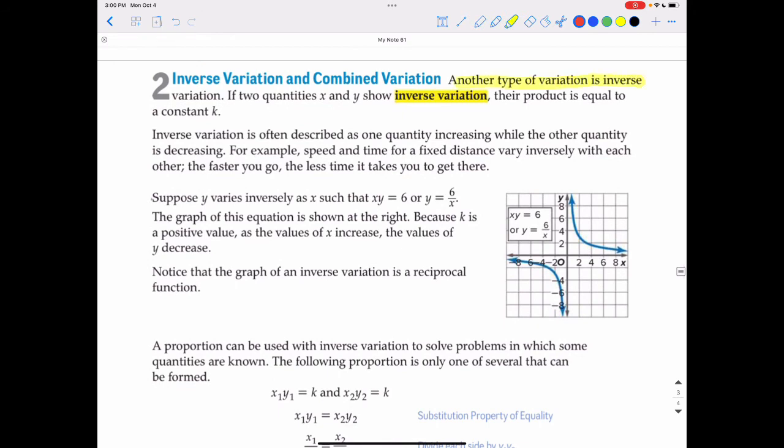Another type of variation is inverse variation. If two quantities, x and y, show inverse variation, the product is equal to a constant k. Inverse variation means that as one value increases while the other value is decreasing. For example, speed and time for a fixed distance may vary inversely with each other, meaning the faster you go, the less time it takes you to get to some place. Notice that the graph of inverse variation looks very much like a hyperbola or a reciprocal function. Whereas one value increases, the other value decreases.